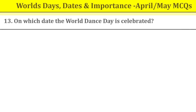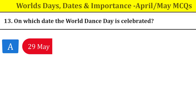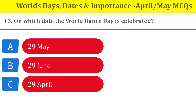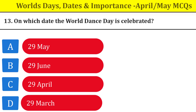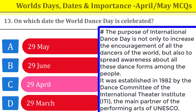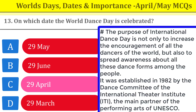Question number thirteen: on which date is World Dance Day celebrated? World Dance Day — I am covering important worldwide dates for May and April. 29th April is World Dance Day, celebrated not only to encourage dancers of the world but also to spread awareness about dance forms among people. It was established in 1982 by the Dance Committee of the International Theater Institute, whose main partner for performing arts is UNESCO.